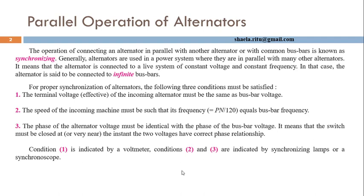After a single generator supplying all the connected load in the power system is a very rare scenario. Other than emergency generators, rarely there is a case where a single isolated generator supplies a load in the power system network. Usually, to fulfill demand, multiple alternators are connected in parallel.